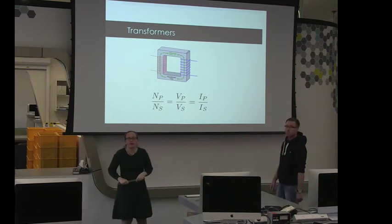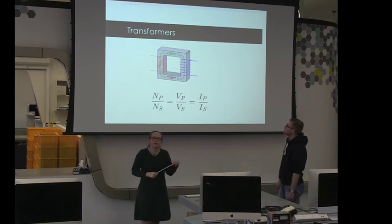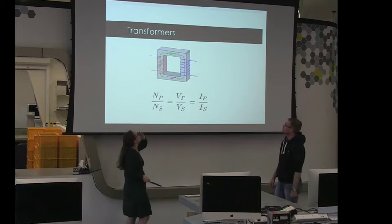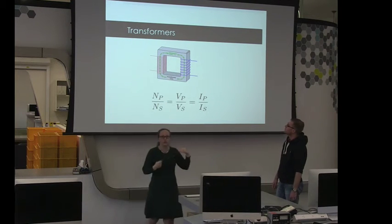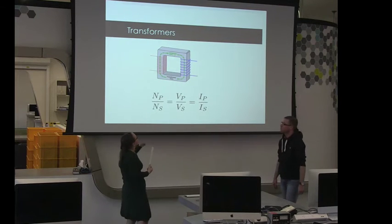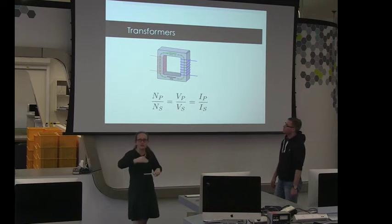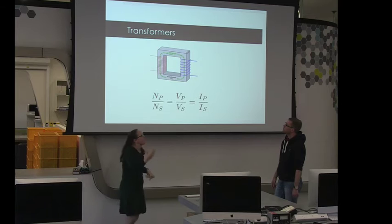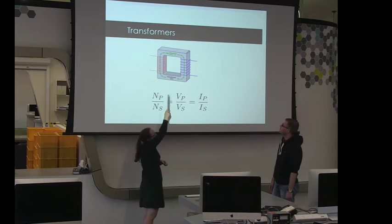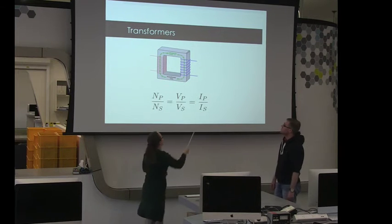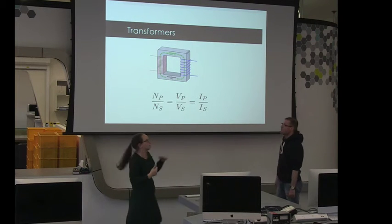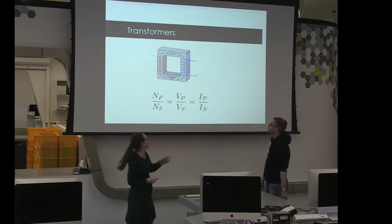We're also going to have a look at transformers in this experiment. Transformers make use of Lenz's law and Faraday's law. In a transformer, you input an alternating current on the primary side. And that alternating current, because it's constantly changing, creates a constantly changing magnetic field. The constantly changing magnetic field can travel through the transformer core here, and that induces a voltage or current in the secondary coil.